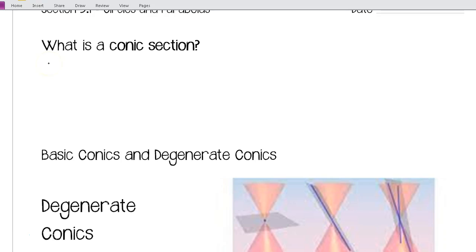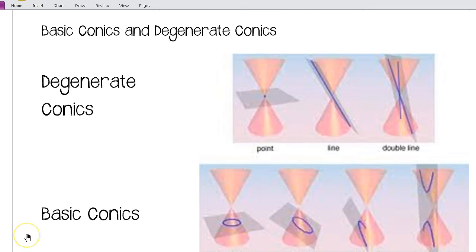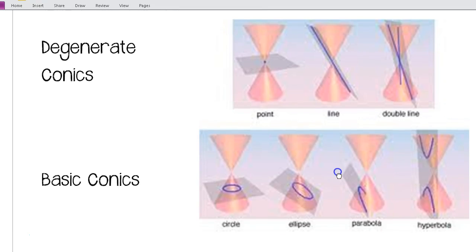A basic definition would be a figure formed by slicing a double-ended cone by a plane. And we can see over here in this picture what a double-ended cone would look like. So, you see in all these pictures we have two cones end-to-end and depending on where our plane cuts through the cone, we'll get different conic sections.